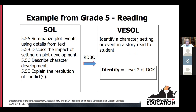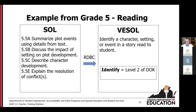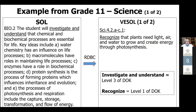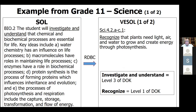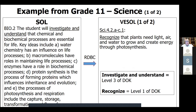For the grade five reading example, the SOL 5.5 includes four bullets asking the student to summarize plot events, discuss the impact of setting, describe character development, and explain the resolution of conflicts. Although the SOL covers a great deal of material at higher levels of cognitive demand, the reduced V-SOL is more tightly focused on identifying a character, setting, or an event in a story which is read to the student. In most cases, a single V-SOL was distilled from the broad academic content of a single SOL. However, for some SOLs there were multiple areas of concepts that didn't fit within one V-SOL but were valuable for our VAP students.